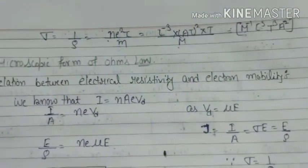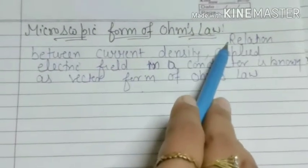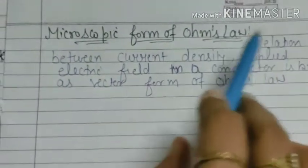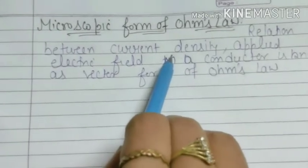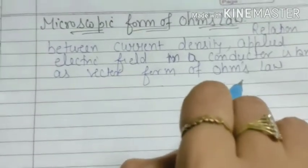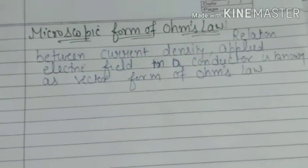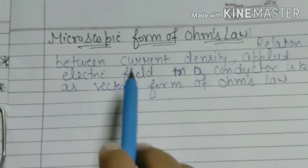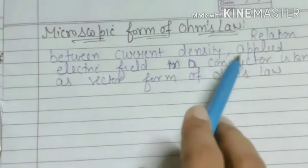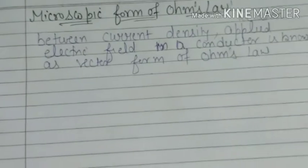Now we discuss the microscopic form of Ohm's law. This form of Ohm's law gives us the relation between current density J and applied electric field E in a conductor — it is also known as the vector form of Ohm's law. हम यहाँ पर एक new term पढ़ रहे हैं — current density। Current density देखते हैं इसे कैसे derive करते हैं।